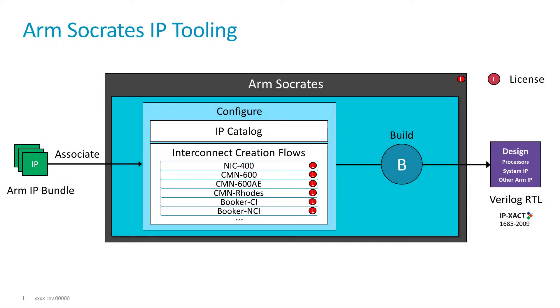Socrates is the official ARM tool for ARM IP configuration. The IPs are listed in the so-called IP catalog, where they are grouped by product line and then subdivided into product categories and so on.